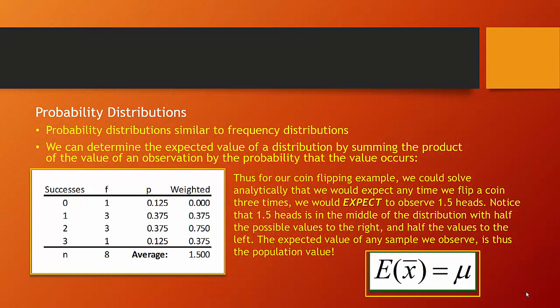When we establish a theoretical probability distribution, think of them as being similar to frequency distributions covered earlier in the class. We can determine the expected value of a distribution by summing the product of the values of an observation by the probability that observation occurs. For example, if we wanted to know how many heads we would reasonably expect on three sequential flips, we take the values — 0 heads, 1 head, 2 heads, and 3 heads — and multiply them by the probability with which they occur. When we add up those values times probabilities, we get an average — our theoretical expected value. We would expect to observe 1.5 heads every time we ran this three-coin-flipping experiment.